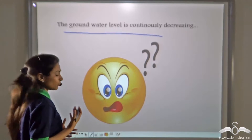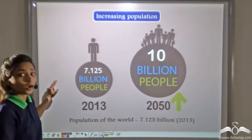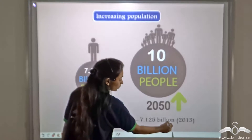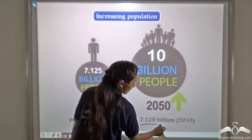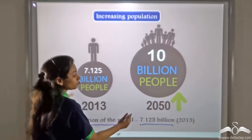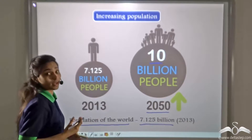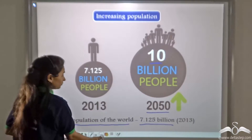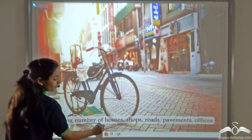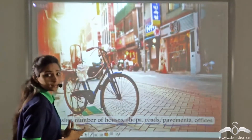There may be some reasons for this — let's see what. The first reason is the increasing population. The world population in 2013 was 7.125 billion, and it is estimated that by 2050 it will reach 10 billion people. That's a huge number. Due to this increase in population, there is an increase in the number of houses, shops, roads, pavements, offices, and all other things.